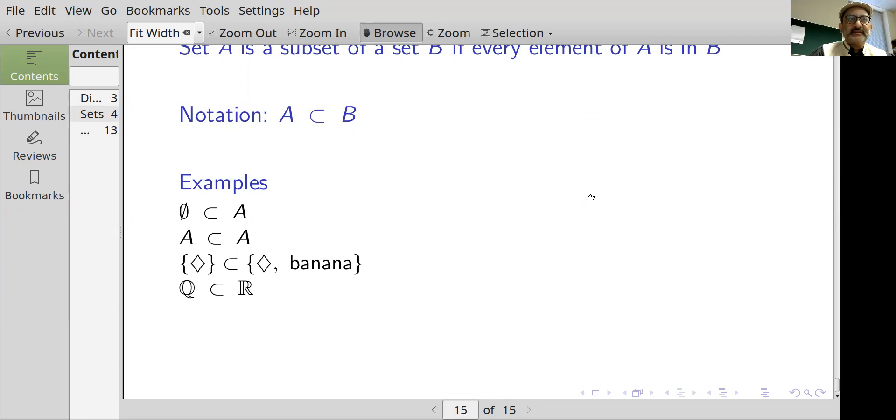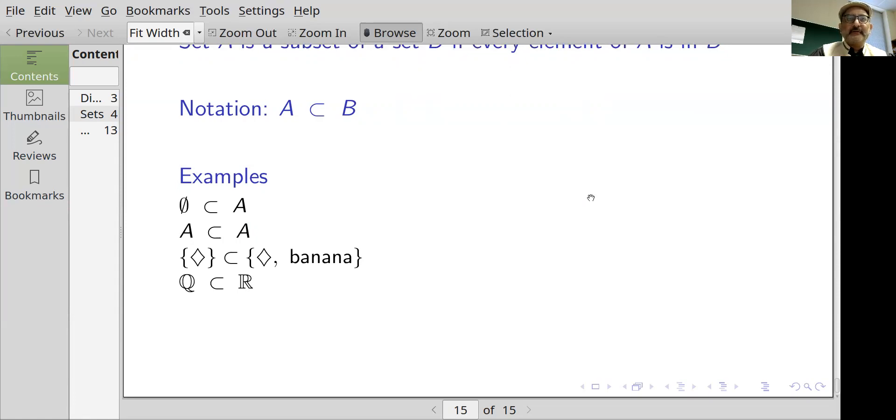The set consisting of diamond is a subset of the set with elements diamond, banana. And the rational numbers are considered to be a subset of the real numbers.